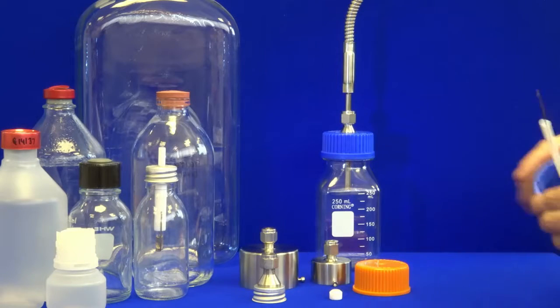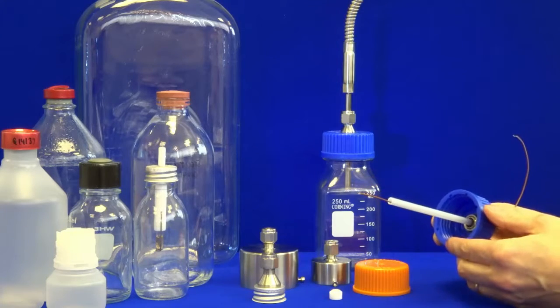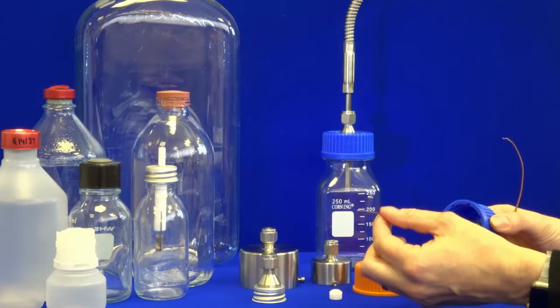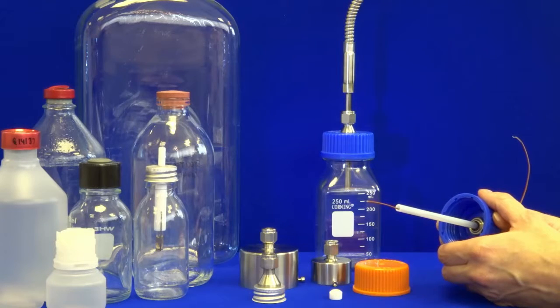Next we have the validation bottle caps and this is designed for holding validation wires centrally within a bottle of liquid, and this would usually take place whilst temperature mapping for validation purposes.